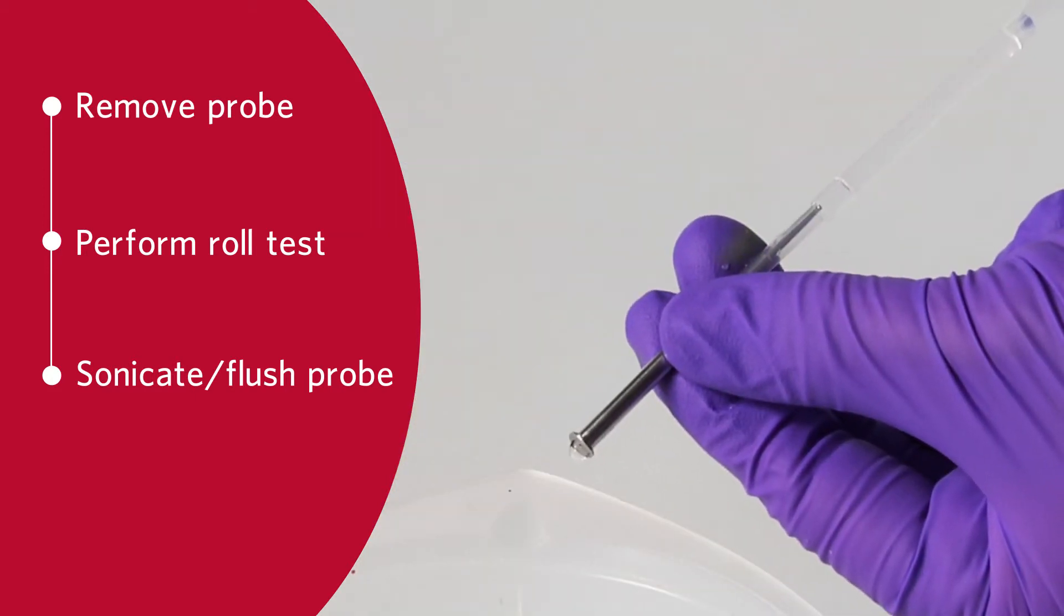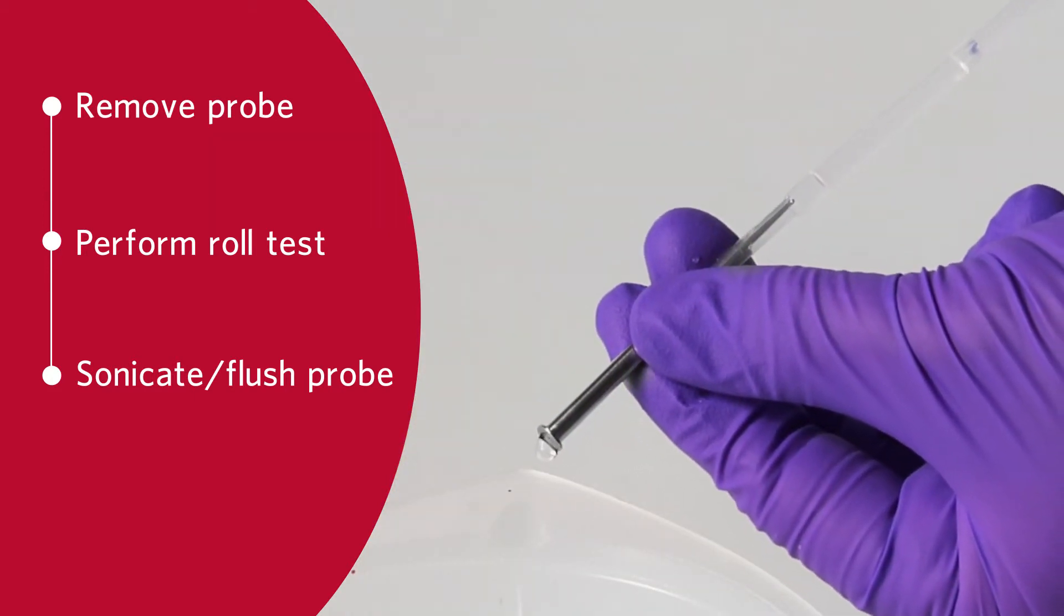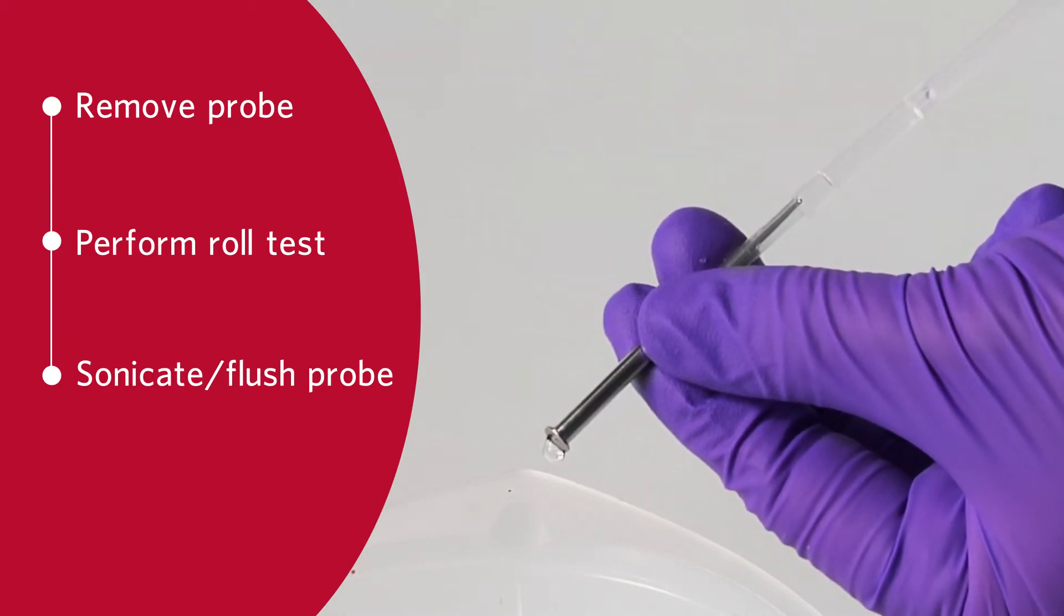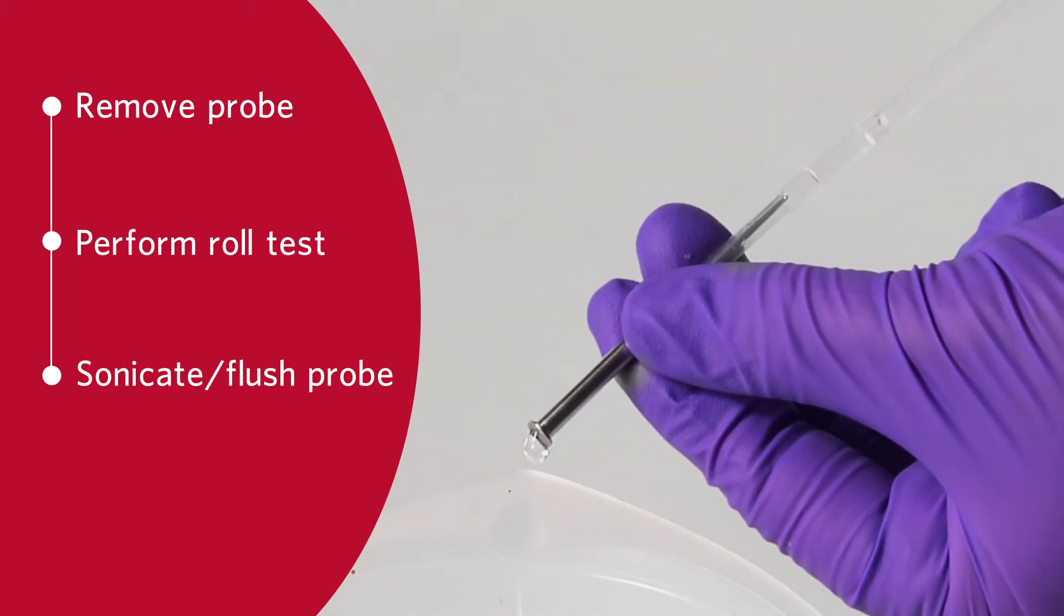If using a syringe, force distilled water through the tip of the sample probe to its large end. This dislodges any debris clogging the tip.